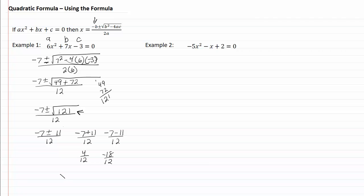I'm going to reduce those, so x is going to be one-third — and let's see, both of those are divisible by six — so negative three-halves. And I've solved example one.